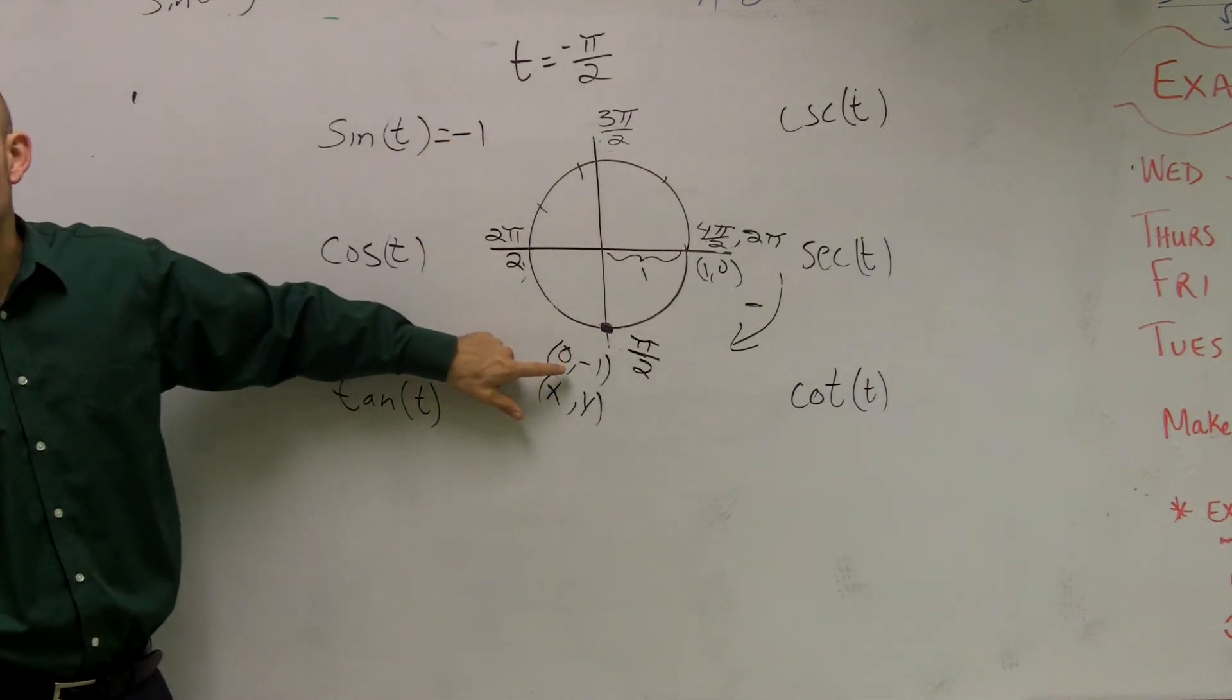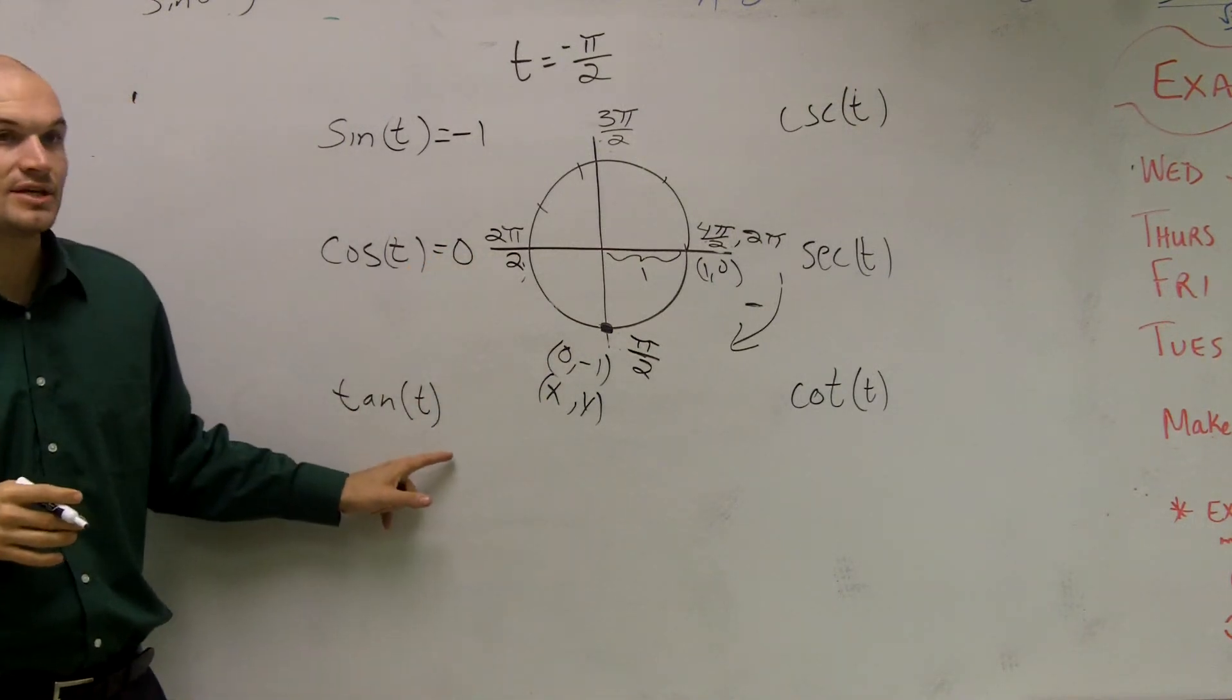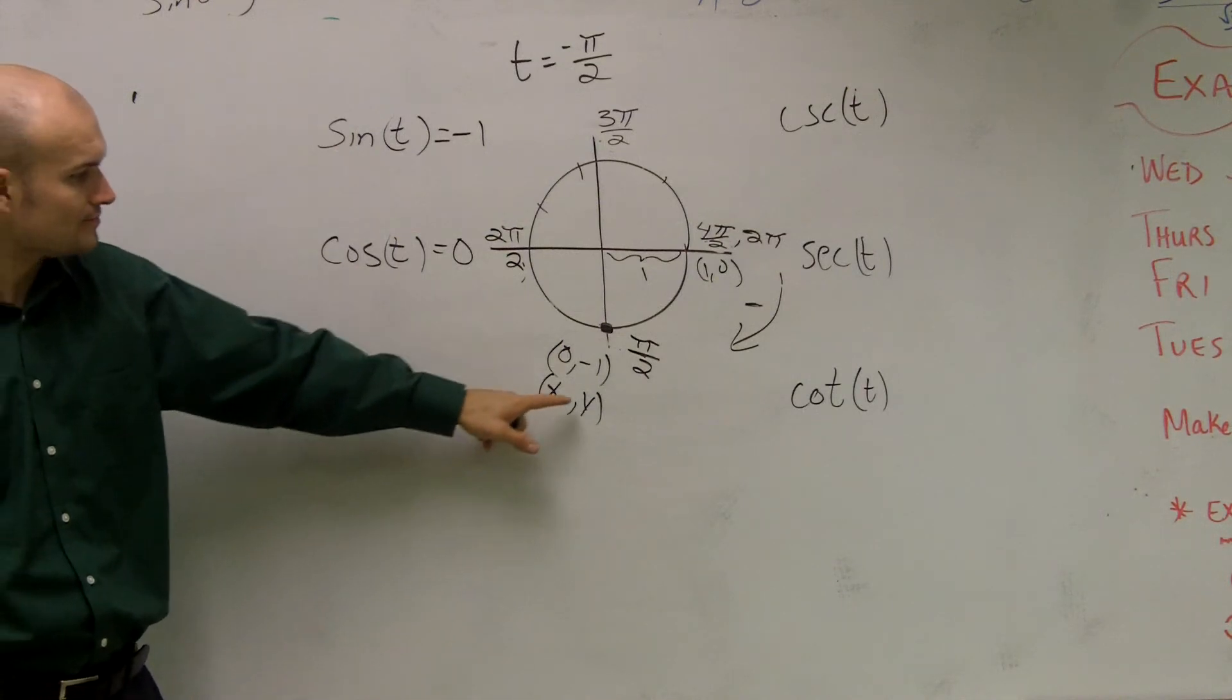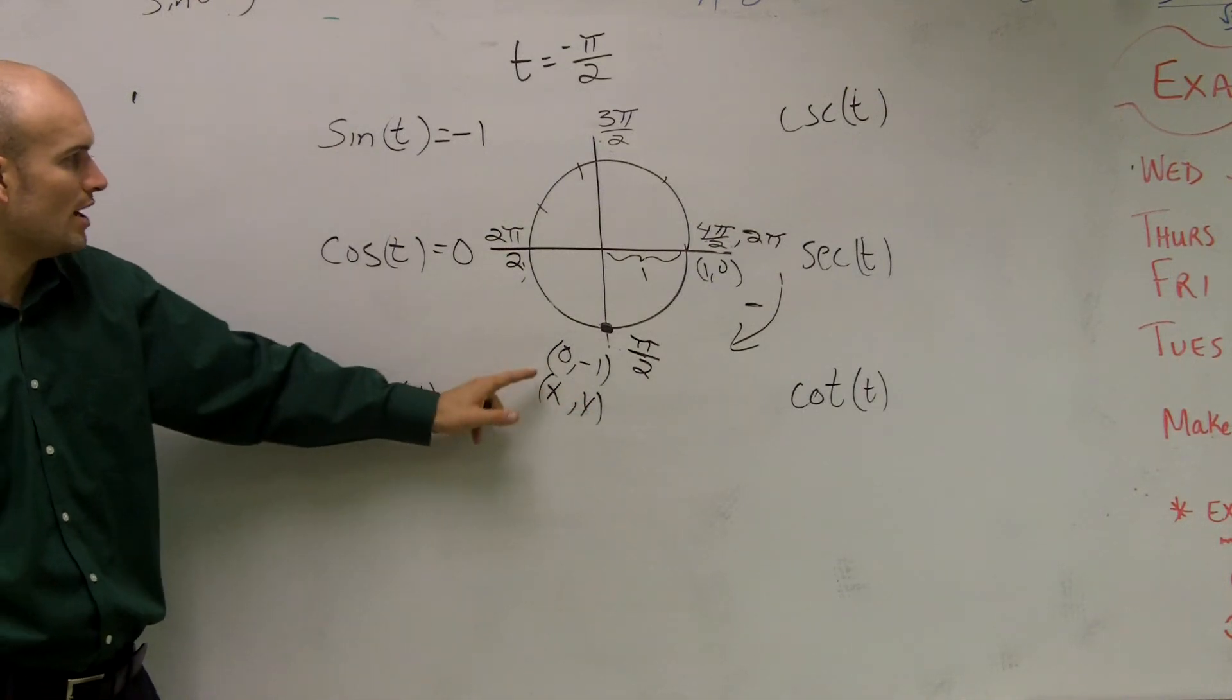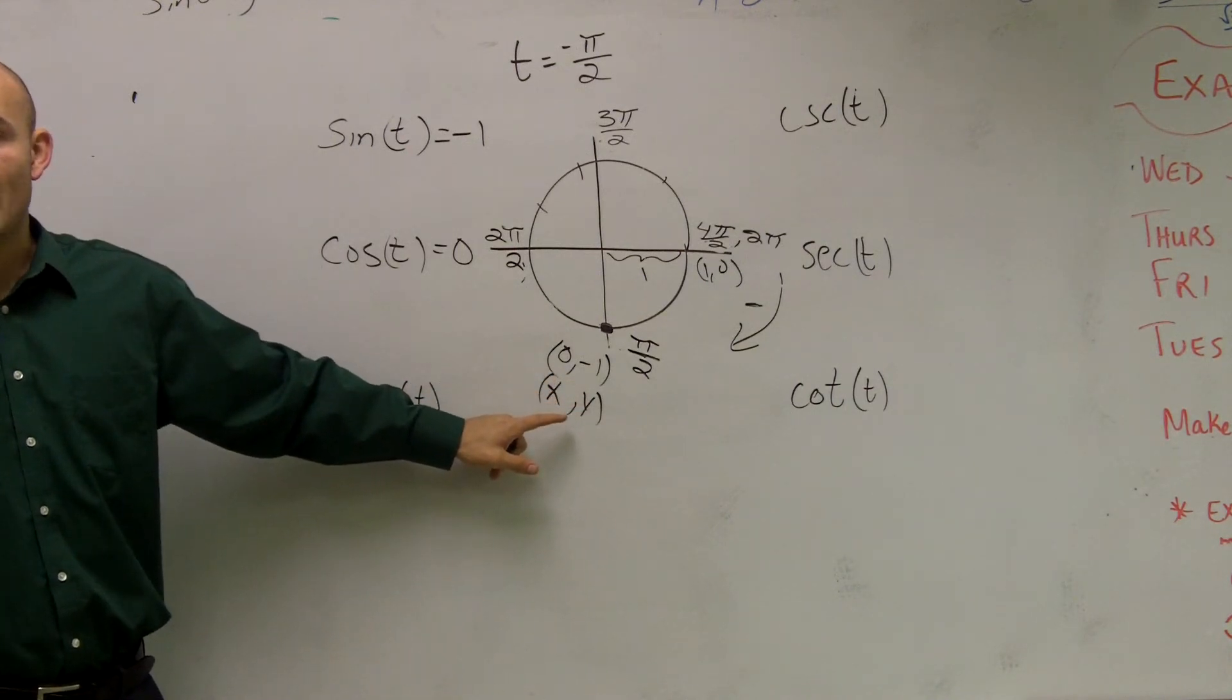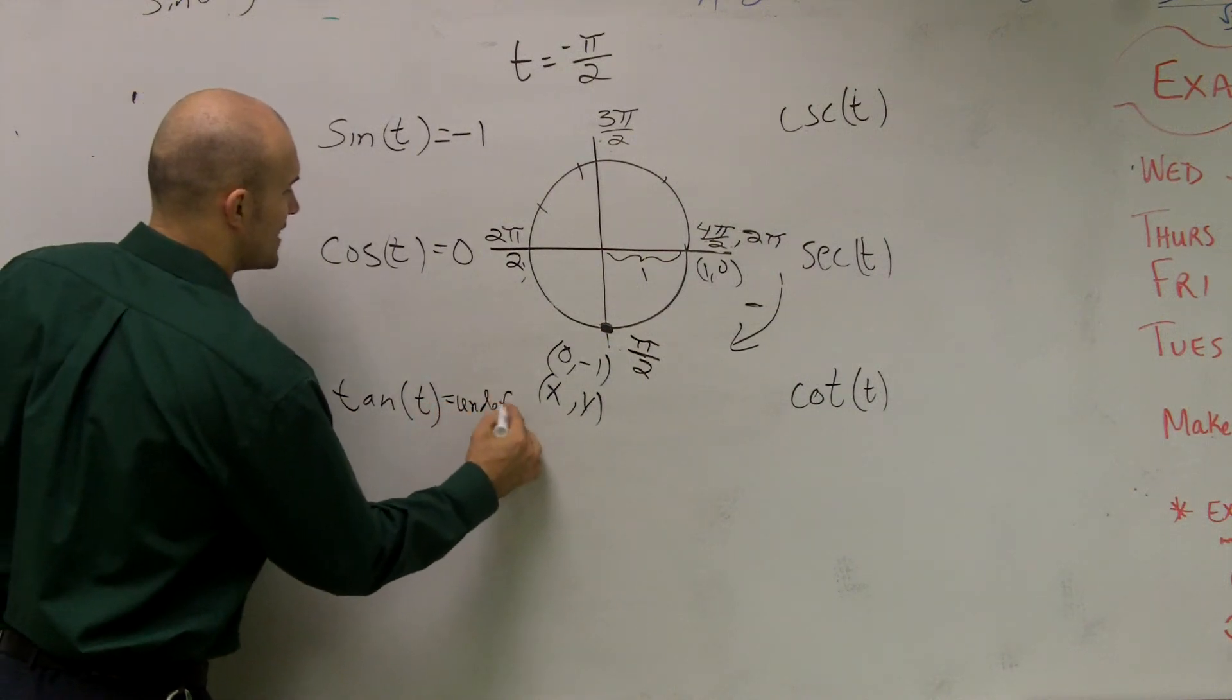Cosine is what it values for x. This is your x value. Tangent is going to be the ratio of y divided by x. So if I look at that, that's negative 1 divided by 0. But can you have 0 on the bottom? No. So therefore, this is going to be undefined.